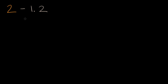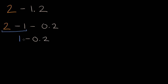There are multiple ways to tackle this. One way is you could say this is the same thing as two minus one minus two-tenths. This is two minus one and two-tenths — so we're subtracting one and we're subtracting two-tenths. Now two minus one is pretty straightforward: two minus one is going to be one, and then we need to subtract two-tenths from that. One is the same thing as ten-tenths.